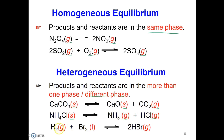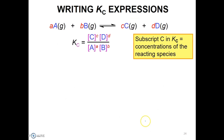Or we have hydrogen gas plus bromine liquid reacting to form 2HBr gas. Now, we focus on writing the Kc expression.